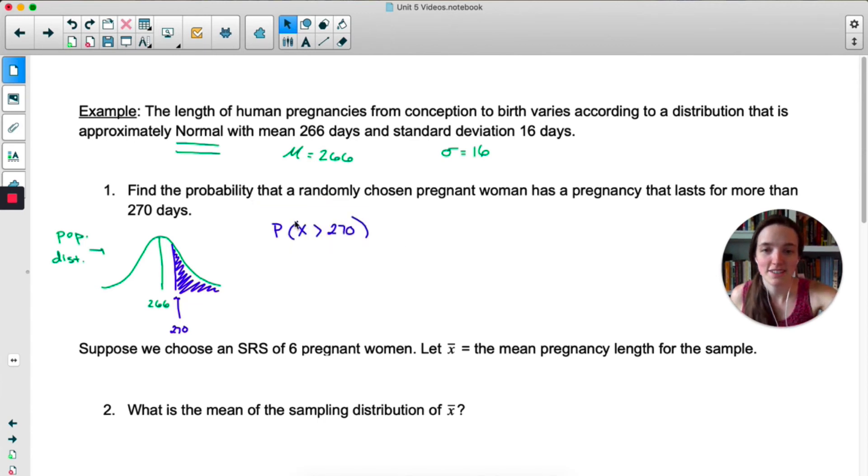So there's the picture. Like I said, good first step. Second step is to write out in symbols what we want to find. Here we are trying to find that x is greater than 270. Notice that I'm using x, not x-bar. X-bar would be if we're taking a sample of women and seeing the mean length of their pregnancies. But this is just a single woman. So I'm doing x. Okay, before we do this, let's make sure. They told us the distribution was normal.